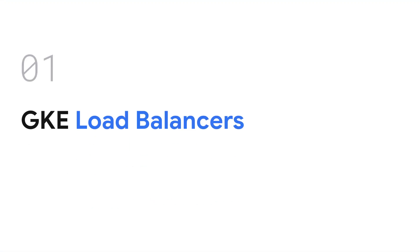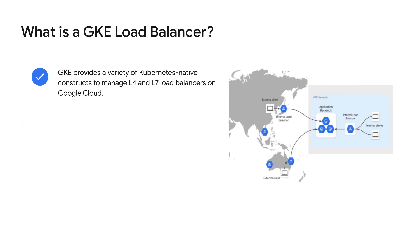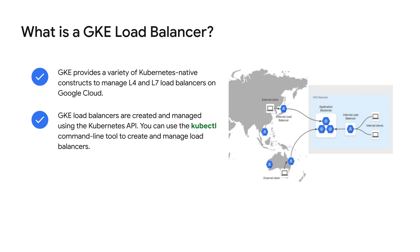To begin with, what is a GKE load balancer? GKE load balancers are used to distribute traffic to pods in a Kubernetes cluster. GKE provides a variety of Kubernetes-native constructs, like service, ingress, gateway, and network endpoint groups to manage layer 4 and layer 7 load balancers on Google Cloud. You can create a GKE load balancer either by using the Kubernetes API or the kubectl command line tool.